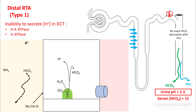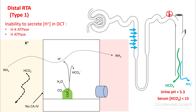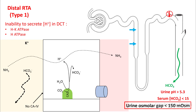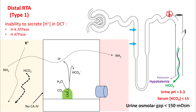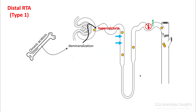So urine pH is alkaline and does not fall below 5.3. You also have low serum bicarb — less than 15. Ammonia that was supposed to combine with hydrogen ions is reabsorbed back into circulation, and there is also some trouble making ammonia in the proximal convoluted tubule, so ammonium excretion in the urine is reduced and urine osmolar gap will be less than 150. There is also a problem with potassium loss because of inability to exchange potassium for hydrogen in the DCT. Chronic acidosis results in bone demineralization and hypercalciuria.